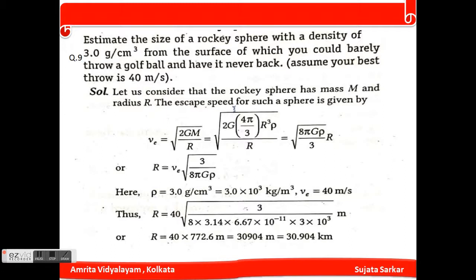Problem number 9: Estimate the size of a rocky sphere with a density of 3.0 g/cm³ from the surface of which you could barely throw a golf ball and have it never come back. Assume your best throw is 40 m/s. V_e equals square root of (2GM/R). After putting the values, 2GM equals 4π/3 times R³ times ρ. After simplification, R equals V_e divided by square root of (8πGρ/3).